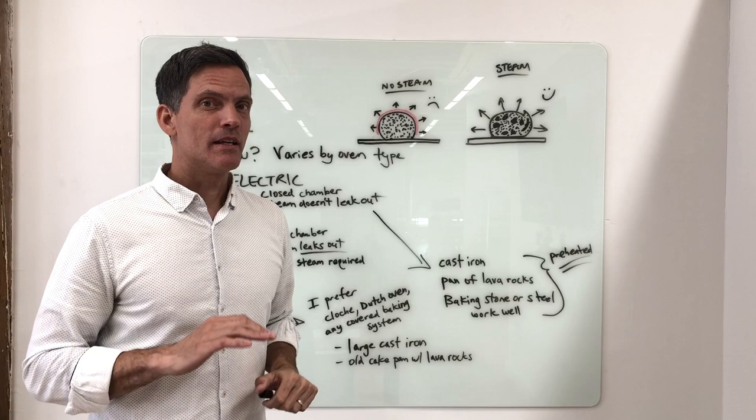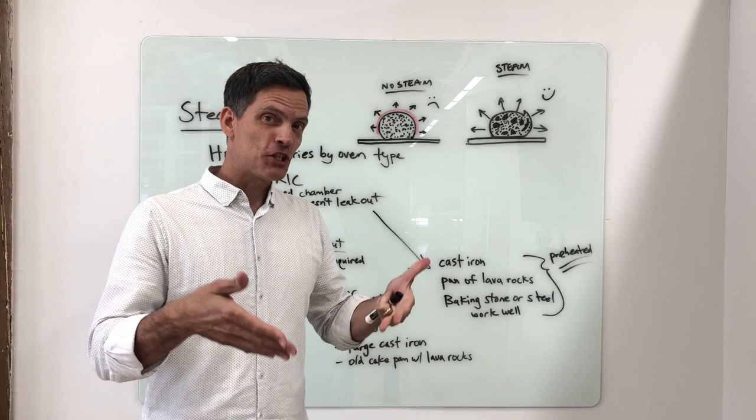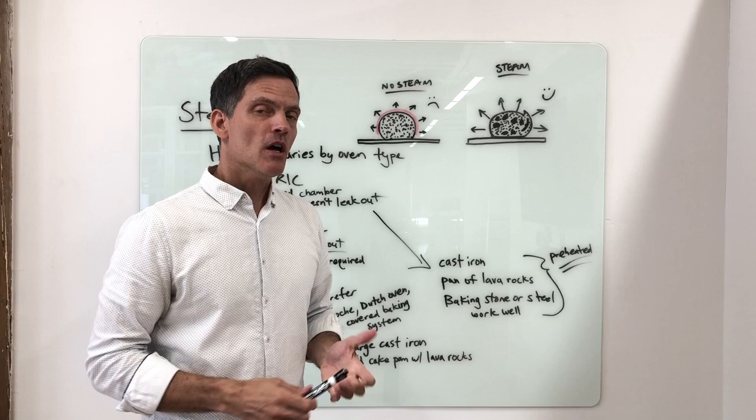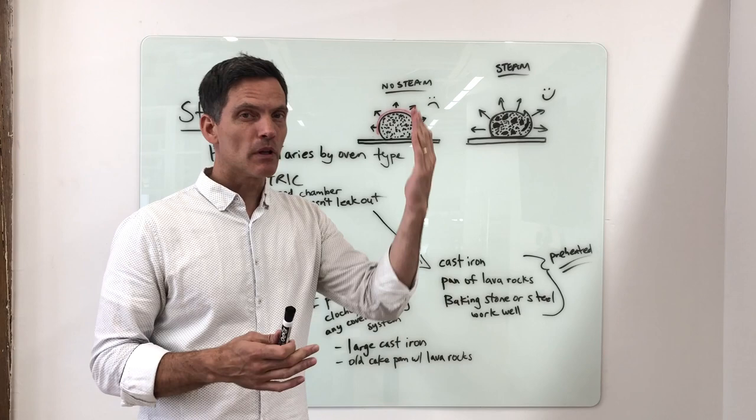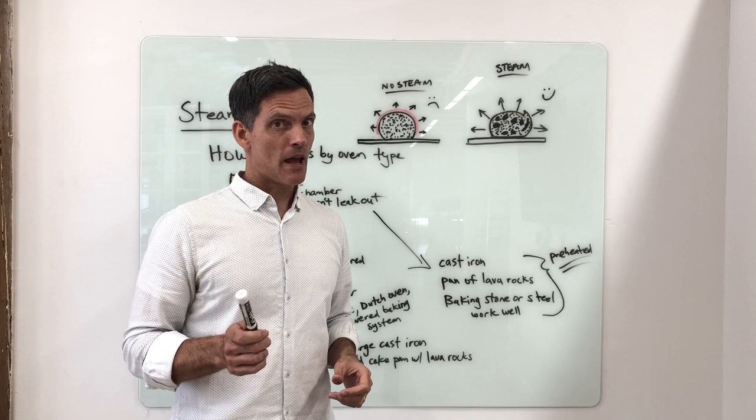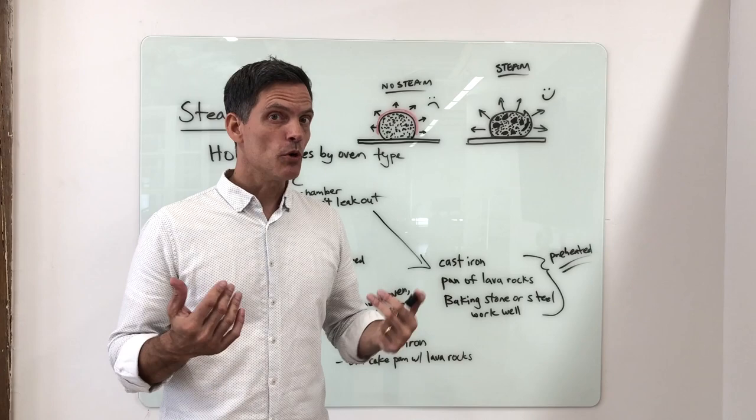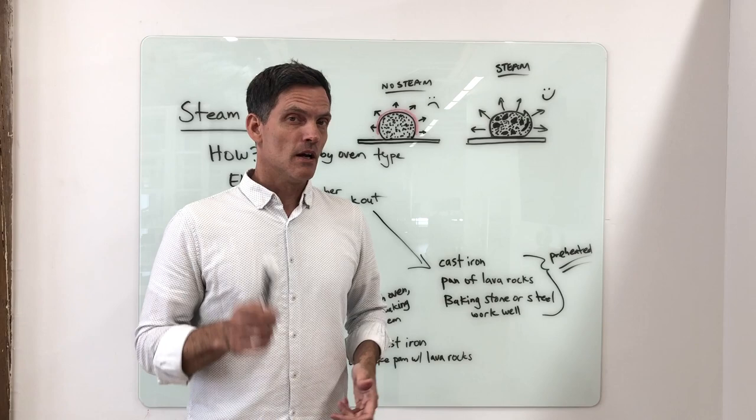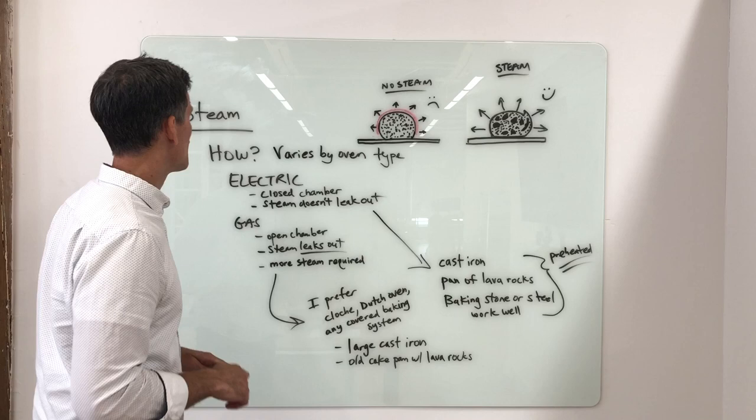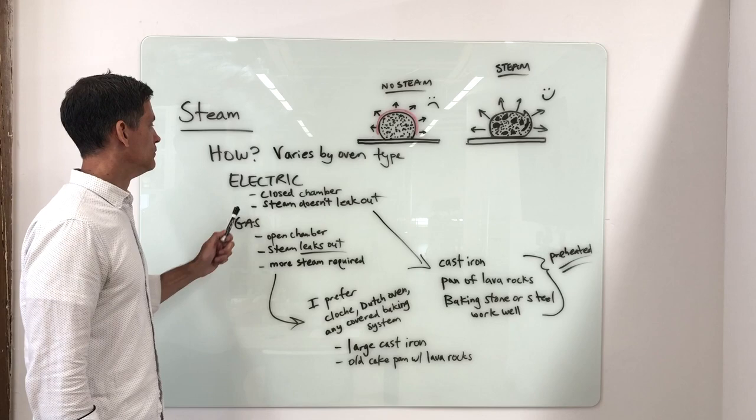When we introduce steam to the bake chamber, where does it go? It goes the same place as the effluent does, relatively quickly. Electric, on the other hand, is a more closed chamber. Electric ovens hold moisture much better. If you're roasting tomatoes or something giving off moisture, you don't put your face near the door when you open it because a lot of steam comes out. Electric oven, it's a closed chamber, steam doesn't leak out. Gas is an open chamber, steam leaks out.